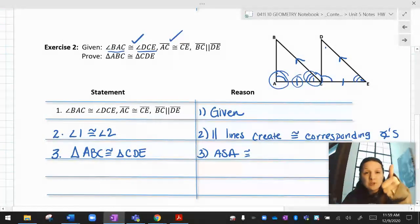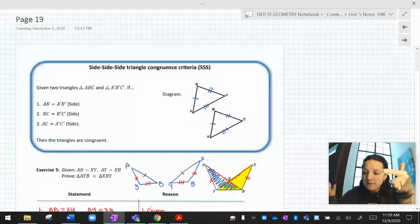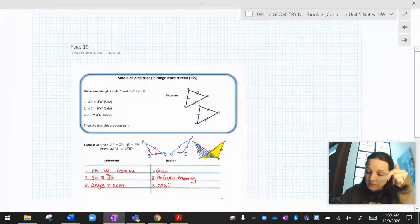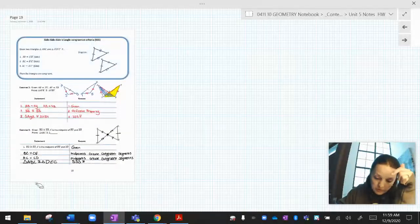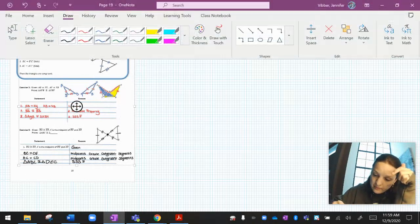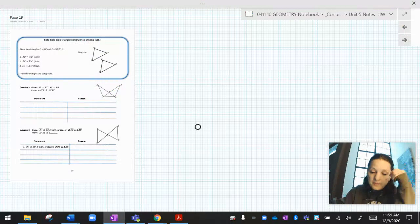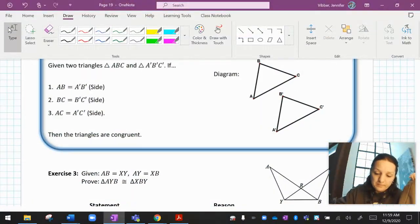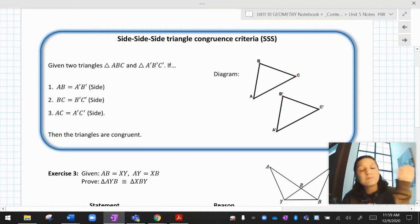So we've done SAS. We've done ASA. Now there's one more. There's SSS for this one. Now, this has got some writing on it. Let me try to make the writing go away. Pretend you don't see this. SSS is another one. What if you don't have any angles? That's okay. Side, side, side is good enough.